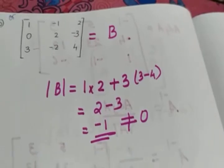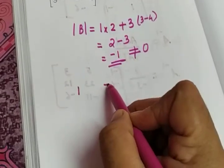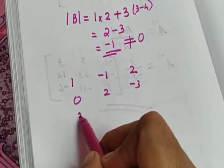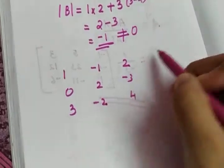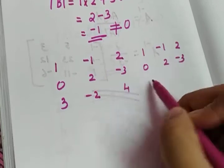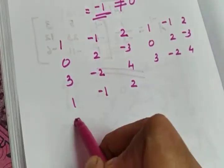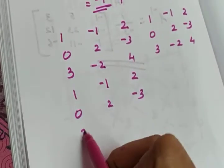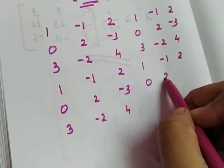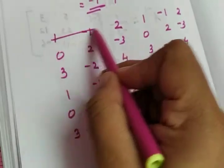Now we need to find the adjoint. Write the matrix B again: 1, -1, 2 / 0, 2, -3 / 3, -2, 4, repeated alongside itself for cofactor calculation. Avoid the last elements as needed to calculate the adjoint of B.